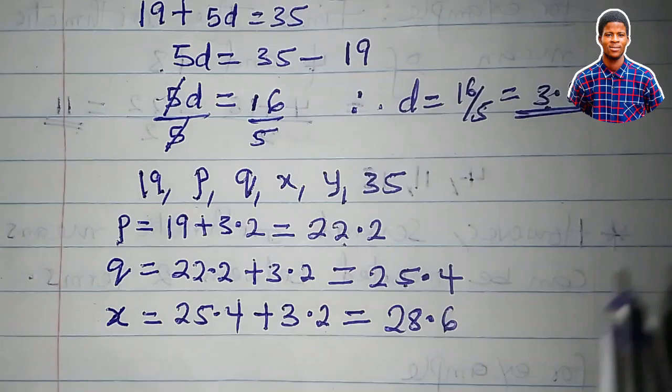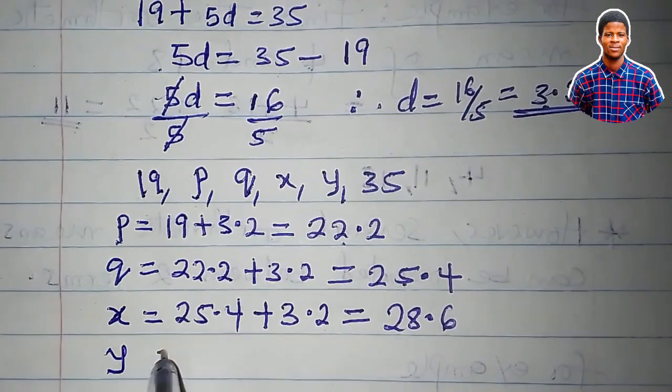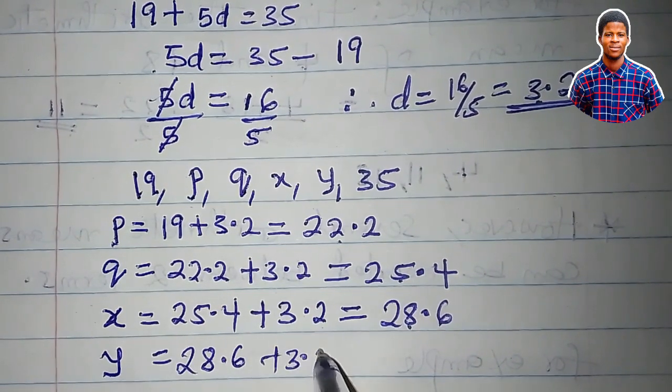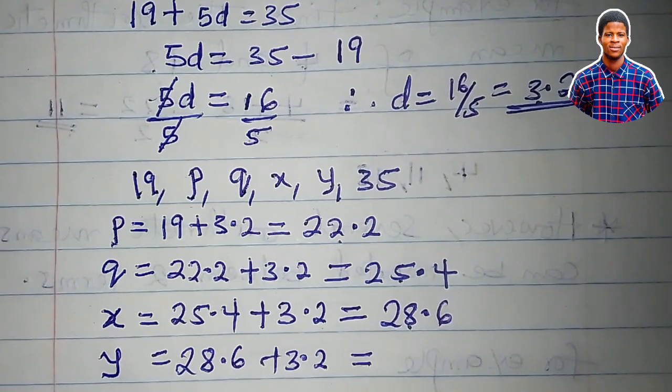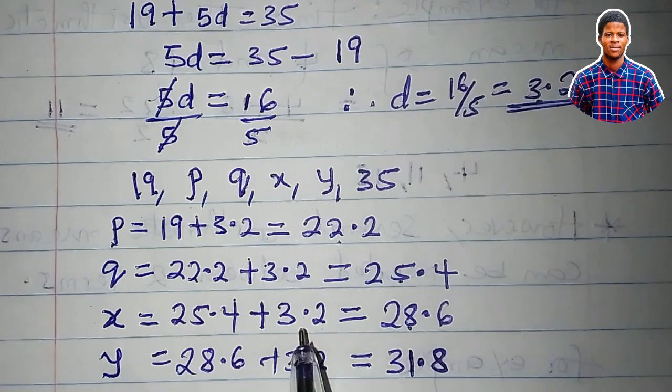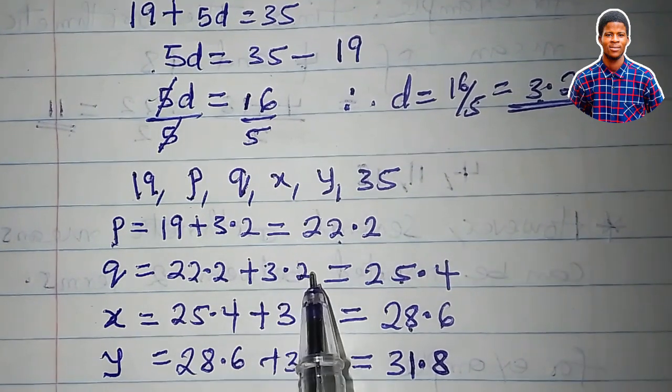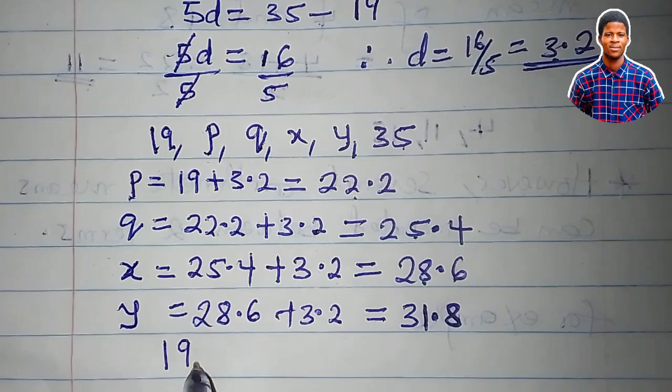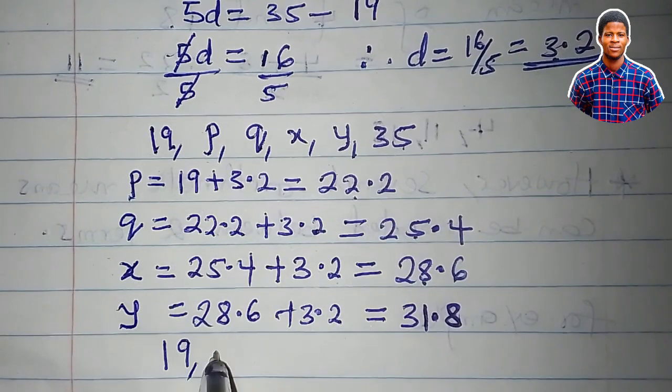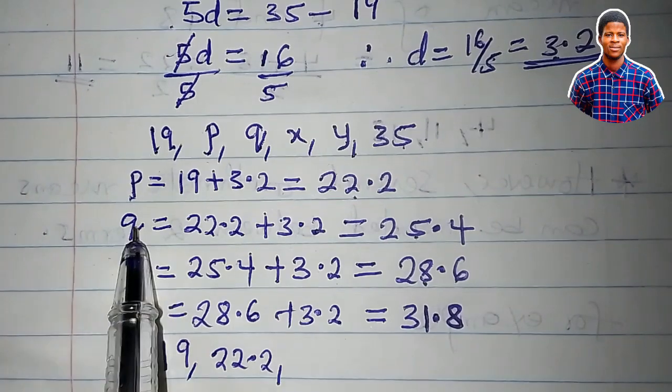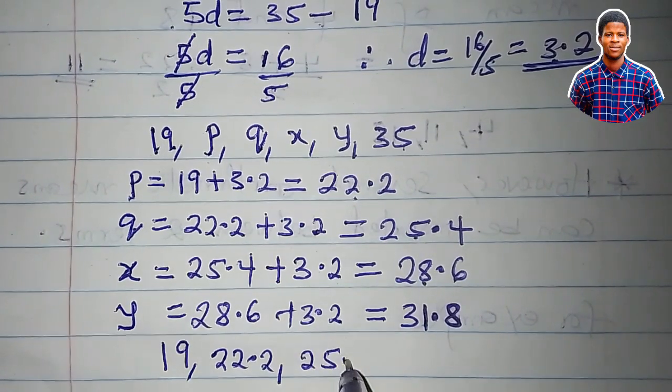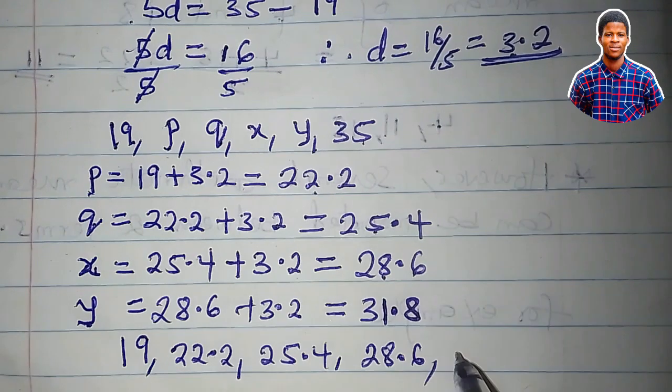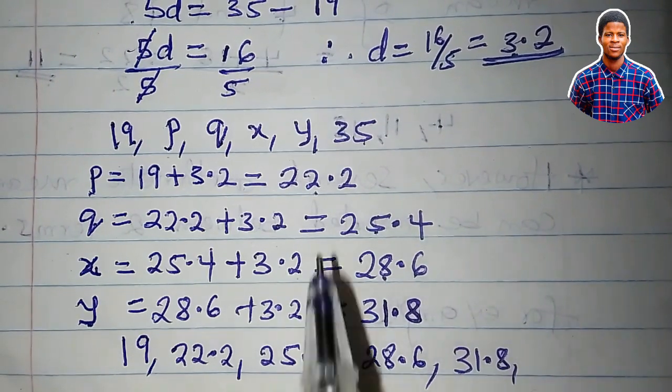We have the last one, Y. Y, I will add the common difference to X, 28.6. 28.6 plus 3.2, and that is 31.8. So if you add 3.2 now, which is the common difference, to 31.8, we are going to obtain 35. So the sequence now is 19, P which is 22.2, Q which is 25.4, X is 28.6, Y is 31.8, and the last term is 35. So these are the arithmetic means in between 19 and 35.